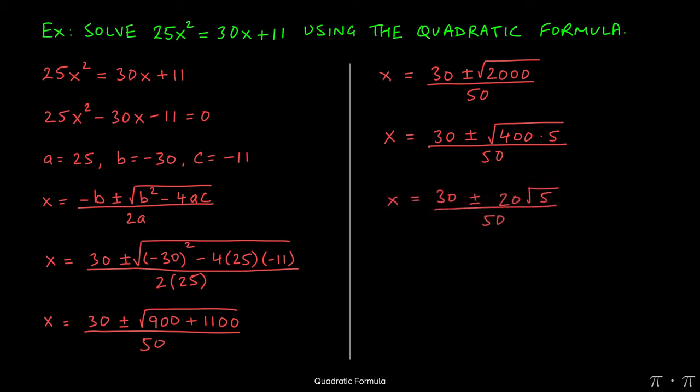So this problem really then just becomes 30 plus or minus, the square root of 400 is 20 times the square root of 5, which is just that. There's nothing we can do to simplify that further, all over 50.